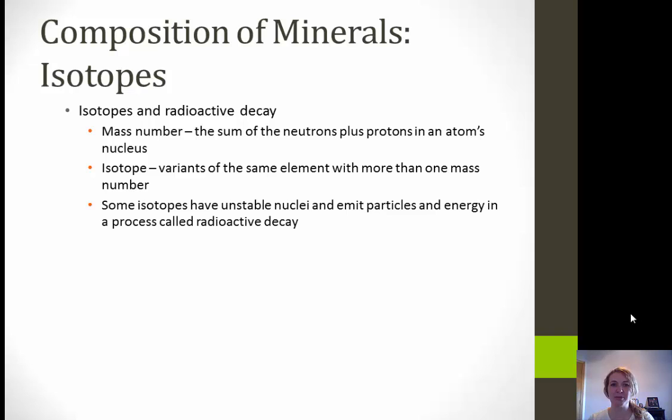Next, we're going to talk about isotopes and a little bit about radioactive decay — we'll cover this in more detail when we get into giving rocks and minerals specific ages. A mass number is the sum of neutrons plus protons in an atom's nucleus. An isotope is a variance of the same element with one or more mass number. Some isotopes have unstable nuclei and emit particles and energy in a process called radioactive decay.